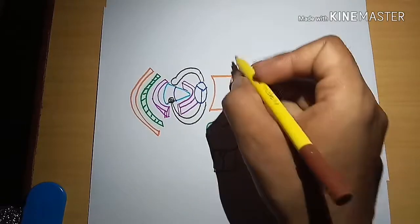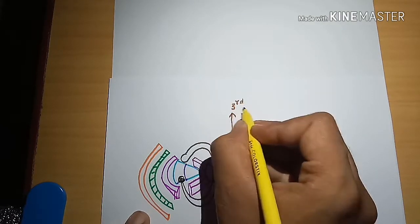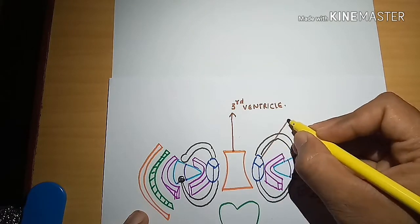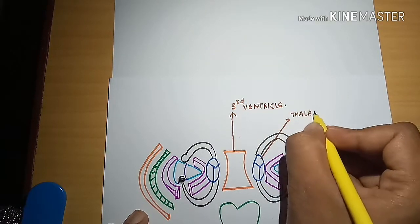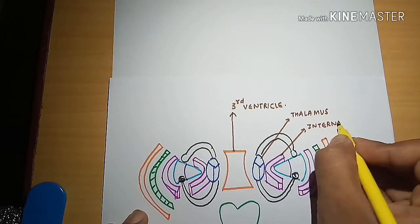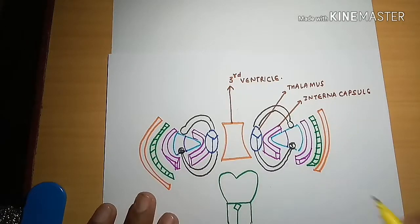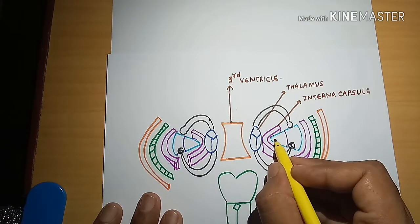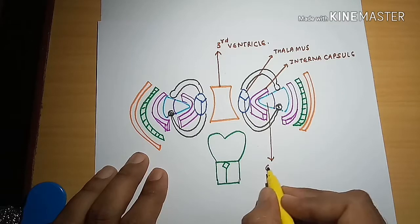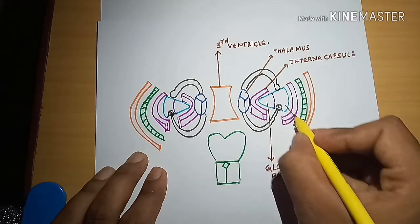This is the third ventricle. These two are the thalamus. This is the internal capsule, which is present in between the thalamus and the lentiform cell. This is the lentiform cell, which has more medially the globus pallidus and laterally the putamen. This medial portion of the lentiform cell is called the globus pallidus, and this lateral portion is called the putamen.